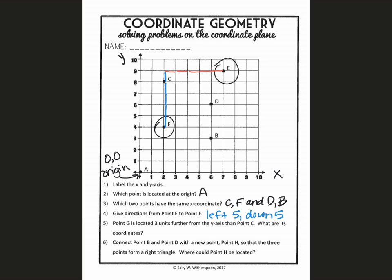All right, number five. Point G is located three units further from the y axis than point C. What are its coordinates? So I would start by locating point C and then going three units away from the y axis. So that would be one, two, three units away. And I would label that with a G. And then I see that the x coordinate would be a five and the y coordinate would be an eight.